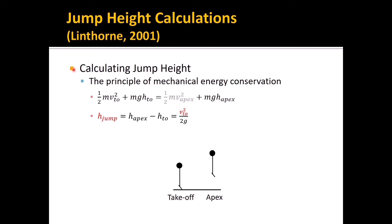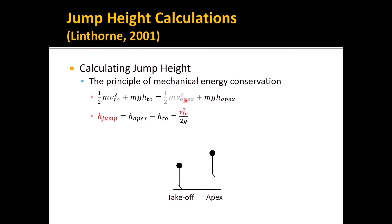This study also introduced how to calculate jump height using the principle of mechanical energy conservation: (KE + PE) at takeoff = (KE + PE) at apex. Since velocity at the apex equals zero, the kinetic energy at apex is zero. The equation can be solved for jump height, which is H_apex minus H_takeoff. As long as we know the velocity at takeoff, we can calculate the jump height.